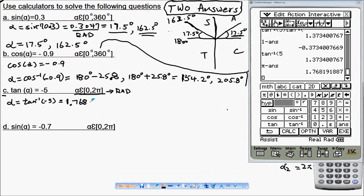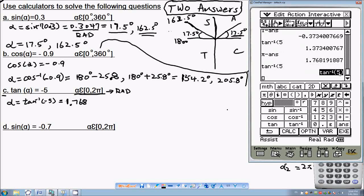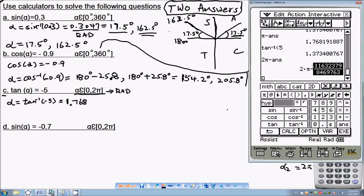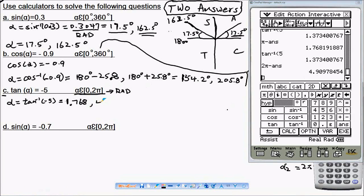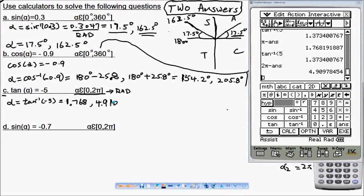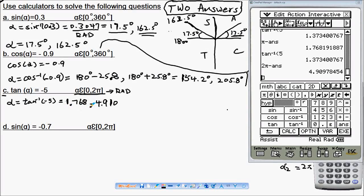The other answer will be 2pi minus that, which is 4.910. Let's make it four significant figures. That's your answer in radians form.